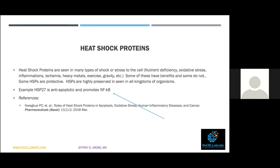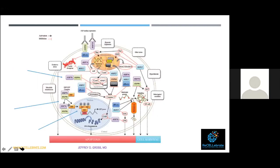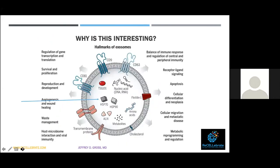Heat shock proteins are highly preserved and seen in all kingdoms of organisms — not just humans, primates, or vertebrates, but all kingdoms. These are quite primitive proteins. Heat shock protein 27 (HSP27) for example is anti-apoptotic — it prevents cell death — and it also promotes NF-κB activity. Looking at the biochemical diagram, the blue lines show important heat shock protein activities involved in the cellular cascade, including cytosolic and nuclear activity.